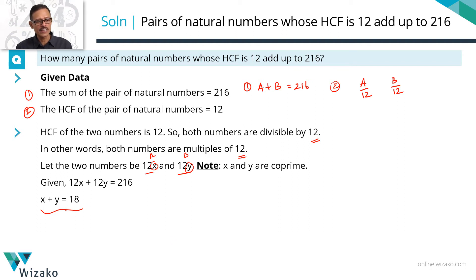What are the two conditions that it should satisfy? X plus y should add up to 18. And as a part of it, I'll say that x and y are both positive integers because A and B are positive integers, x and y are positive integers.